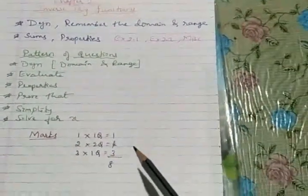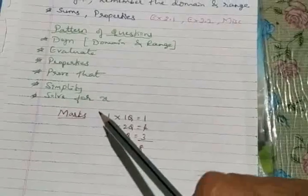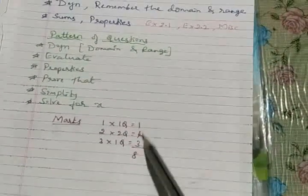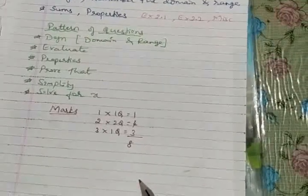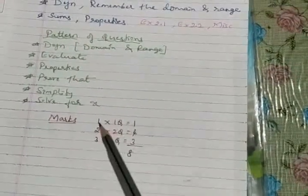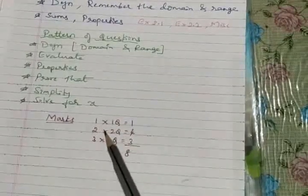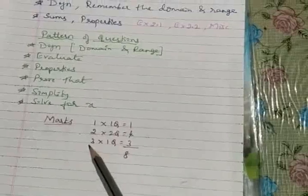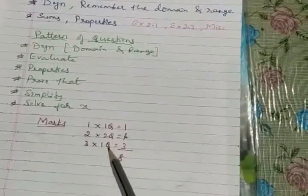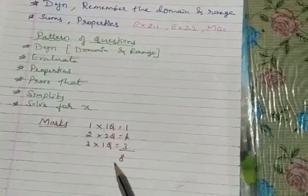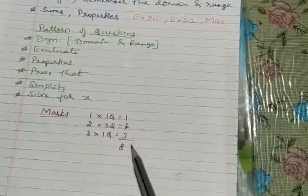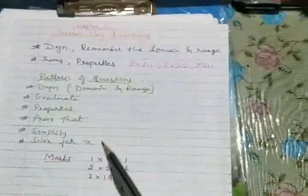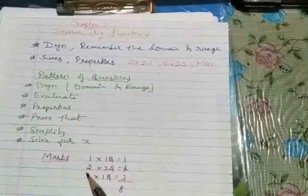Now in the board exam, in the board paper we can say the marks allotted for this chapter according to blueprint is eight marks. So here we don't find lengthy question. One mark one question, two marks two questions, three marks a single one question. So total we have eight marks allotted for this chapter, inverse trigonometric functions. Got it?